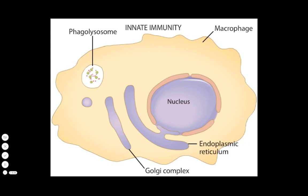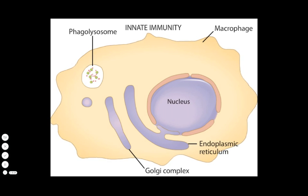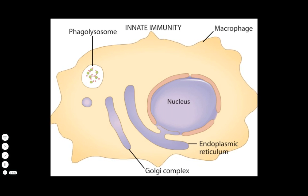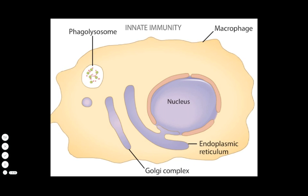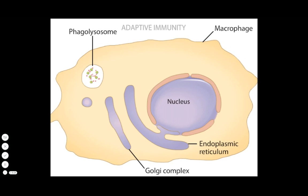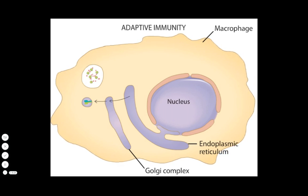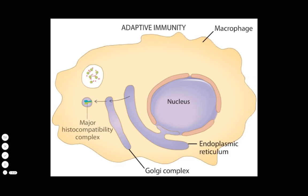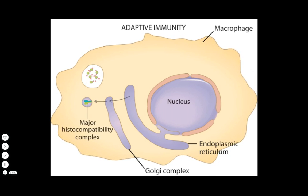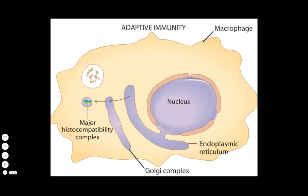The remnants of the bacterium will be disposed of, but before that happens, the macrophage performs its second function, which is adaptive immunity. Membrane protein structures made in the cell, called major histocompatibility complexes, participate in the first step of adaptive immunity.